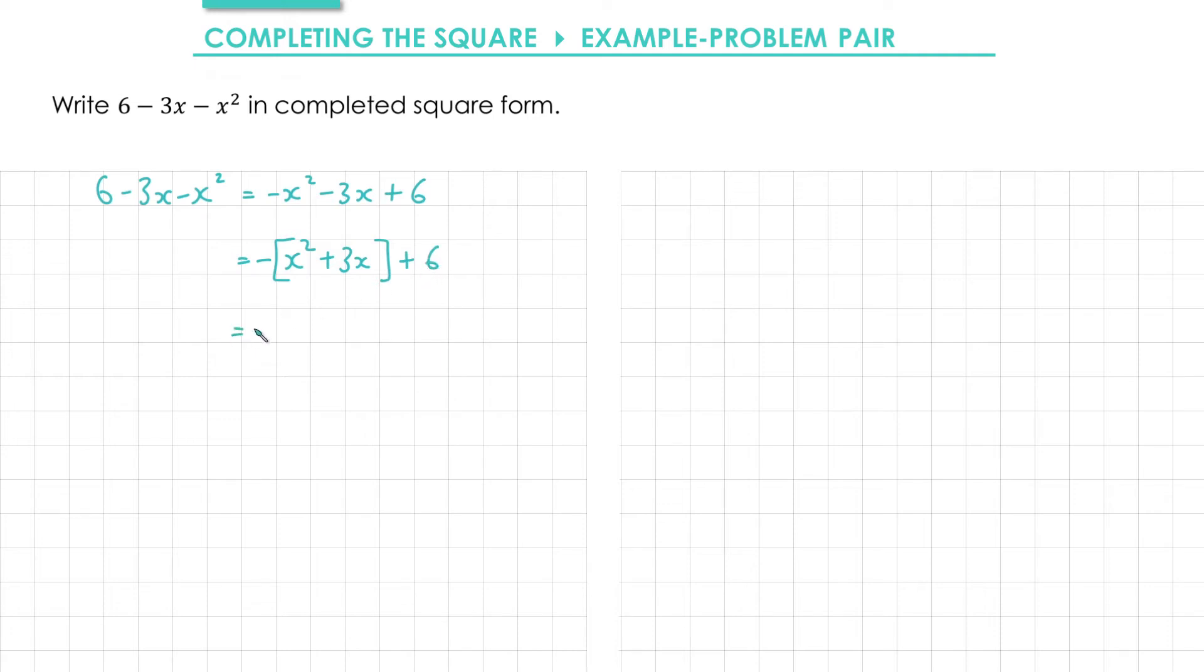Now that I've done that, I'm going to complete the square inside the square brackets. So I've got x squared plus 3x, that gives me x plus 3 over 2 all squared. And then subtract the bit we don't want, 3 over 2 squared is 9 over 4. And then leave the plus 6 on the outside.